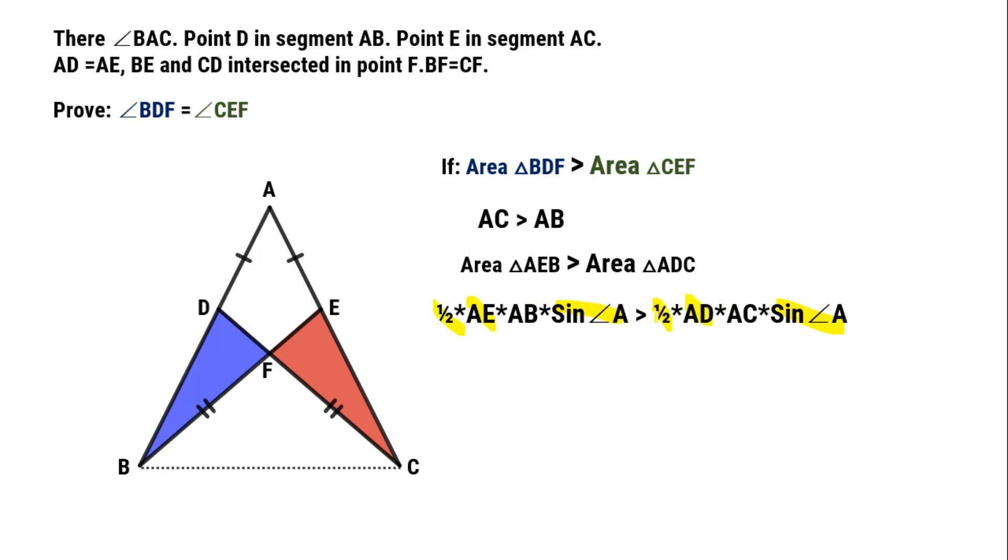After simplified, we can get segment AB larger than AC.